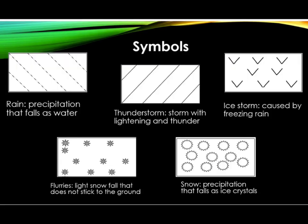Symbols that represent specific types of weather are also used on weather maps. This symbol is used to represent rain, which is precipitation that falls as water. This is the symbol for thunderstorms, which are storms with lightning and thunder. Ice storms are represented by this symbol. They are caused by freezing rain. Ice storms occur when a warm layer of air is trapped between two cold layers of air. Freezing rain falls and then melts, and then freezes again when it hits the second cold layer.